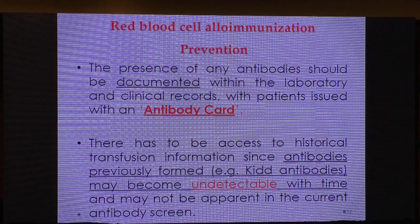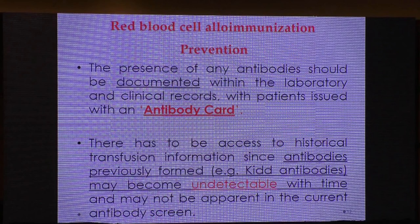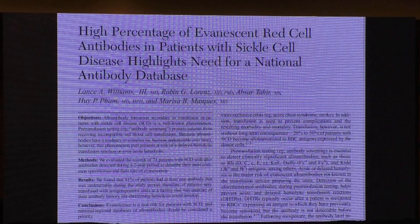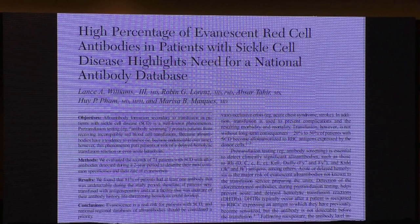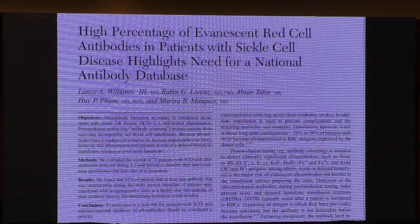Once a wrong or non-antigen-negative unit is given, an anamnestic reaction occurs with rapid increase in IgG antibody, followed by delayed transfusion reaction. Patients with sickle cell disease or sickle thalassemia have a high risk of hyper hemolysis syndrome. There is research proposing a national antibody database — a state-level service where all patient antibody identification data is stored, so any blood bank can immediately provide antigen-negative blood. This is especially important given the high percentage of evanescent (undetectable) red blood cell antibodies in sickle cell disease patients.